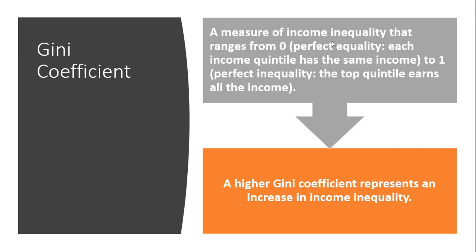So what is a Gini? It's a measure of income inequality that ranges from zero, perfect equality where each income quintile has the same income, to one, perfect inequality, where the top 20% earns all the income. A higher Gini coefficient represents an increase in income inequality.